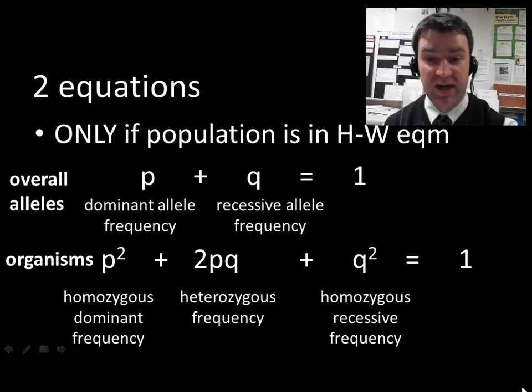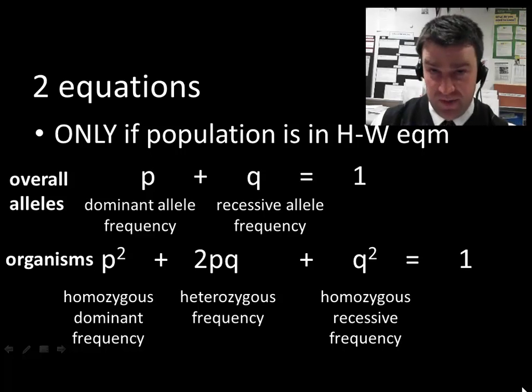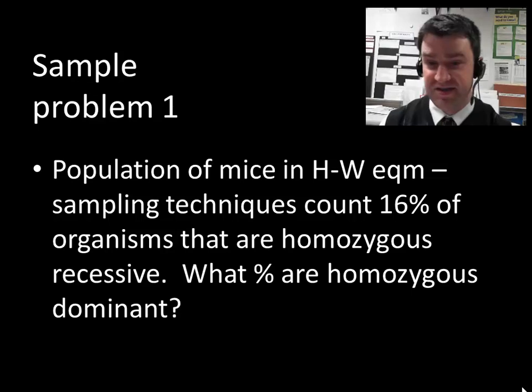That's usually the term that we want to get to, because we usually can work with q squared to get q. Once we can get q, we can get p. And if we have p, q, and q squared, we can get anything else that we need. And q squared is frequently easy to get to, because we can look at how many organisms show the recessive phenotype. And if you show the recessive phenotype for a simple trait, that must mean that you're homozygous recessive in genotype. So let's work through some examples.